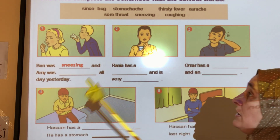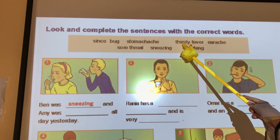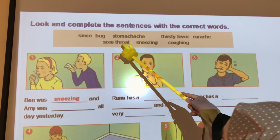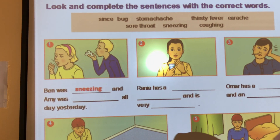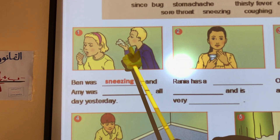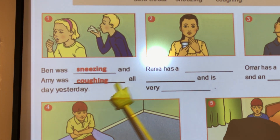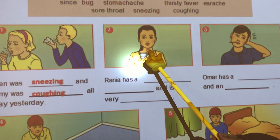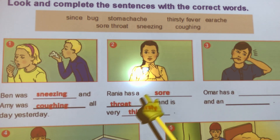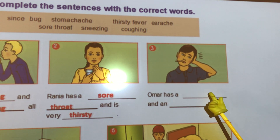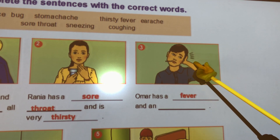Now let's start. First of all, let's read the words together. Look at picture 1 — can you see Ben and Amy? Ben was sneezing, and Amy was coughing all day yesterday. Number 2: Rania has a sore throat and is very thirsty. Be careful — 'sore throat' is two words, not one word. Let's go to number 3: Omar has a fever and an earache.